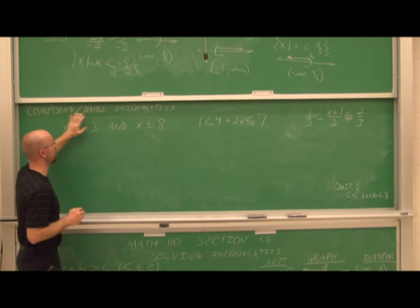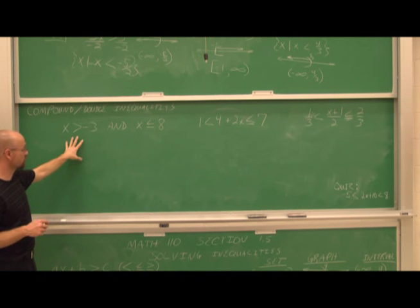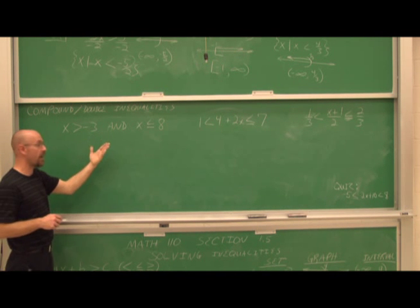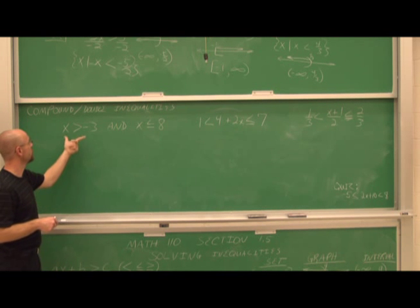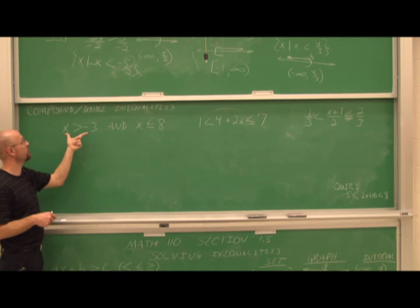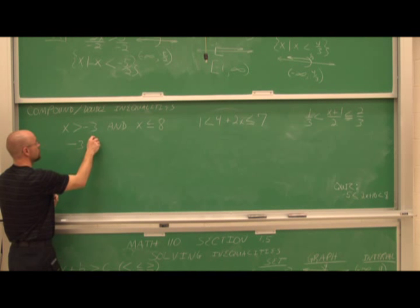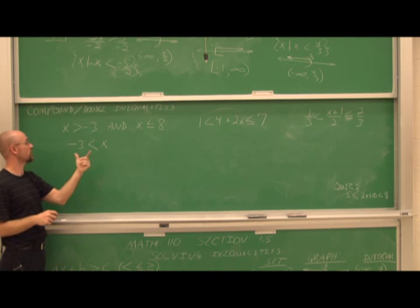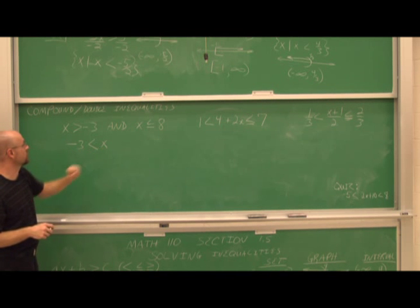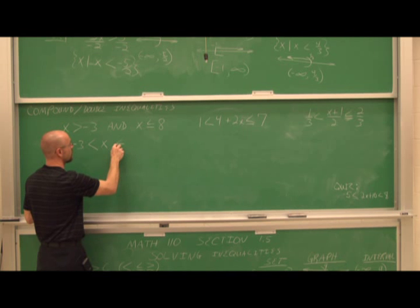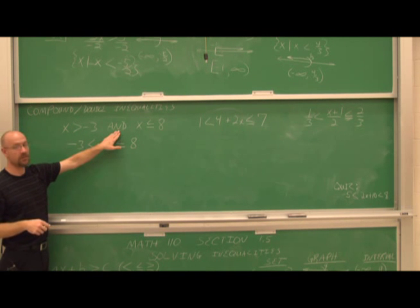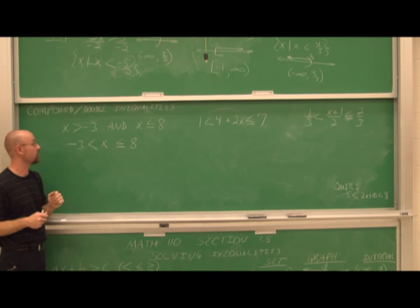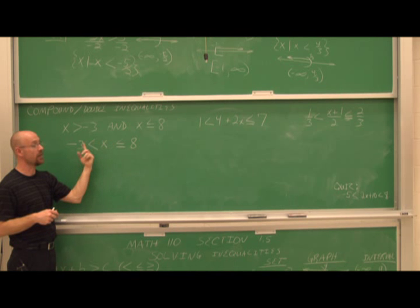Next we look at compound and double inequalities. This is an AND statement — with AND statements, we can write it as a compound or double inequality. Imagine lifting the separate inequality off and flipping it around: negative 3 is less than x AND x is less than or equal to 8. The AND asks which values simultaneously solve both, meaning x must lie between these two values.